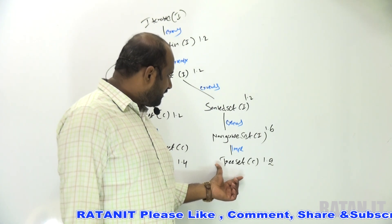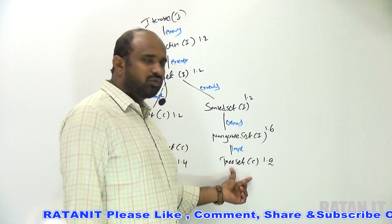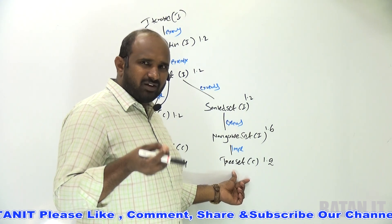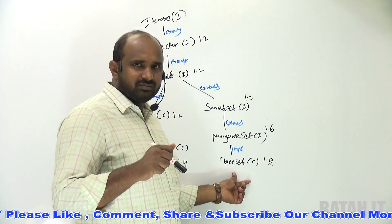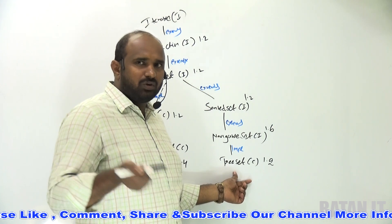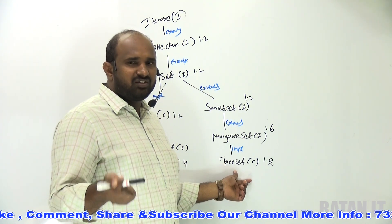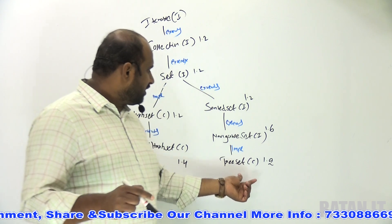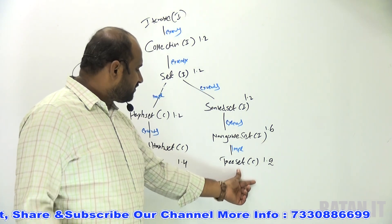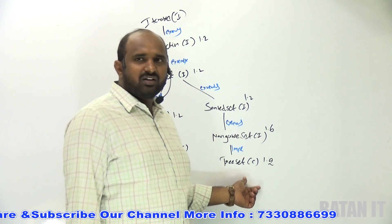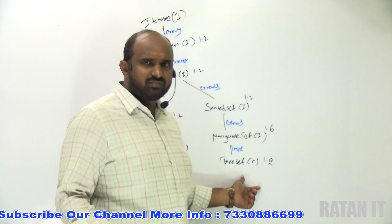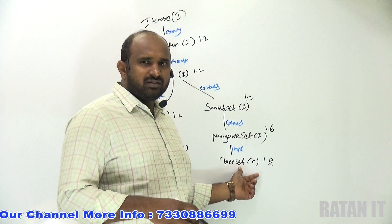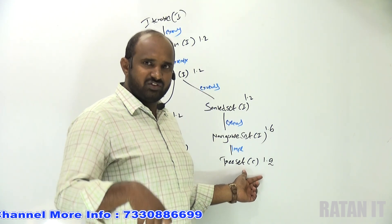TreeSet is basically from SortedSet — the data is stored in sorting order. Sorting order means it allows only homogeneous data, because sorting can be done only on homogeneous data; heterogeneous data is not allowed. Coming to TreeSet, the data is stored in default sorting order. But if I don't want the default sorting order, I want my own custom sorting.